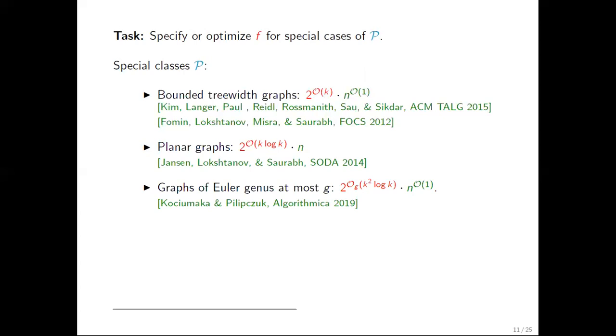At this point, I would like to introduce some notation. Here, and in the rest of the presentation, we use a subscript in the big O notation in order to hide the dependence on secondary parameters concerning the target property. For example, here, the Euler genus.